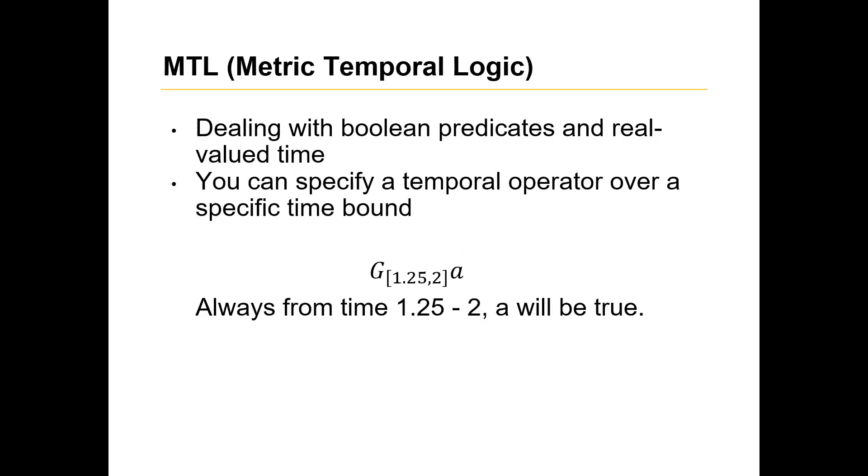Now, metric temporal logic, or MTL. So now you're dealing with continuous time and still dealing with Boolean predicates. The advantage of this is you can specify a range of time values. This is always from time 1.25 to 2, A will be true. So this is more useful. You can specify things if you're driving from one frame to the next, or while the stoplight is red. During this time the stoplight is red, you will always stop. Something like that. It's how this will be used.